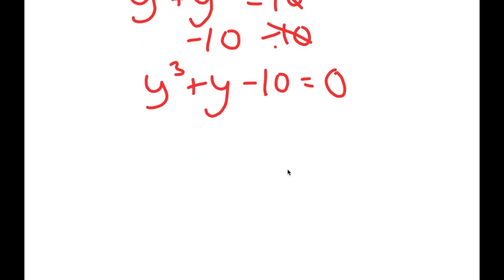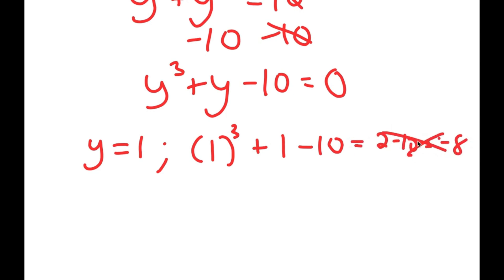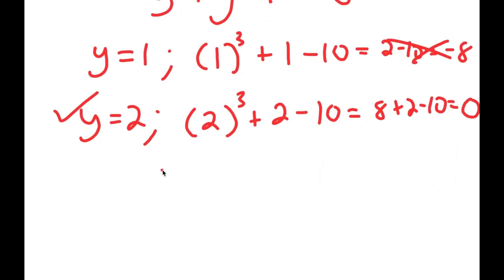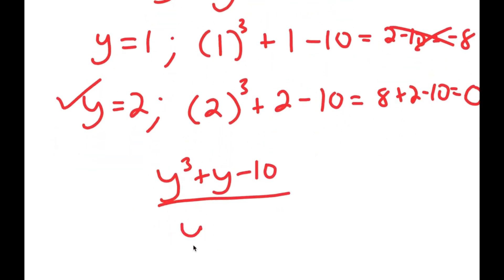To solve this equation, we need to first find one solution and then use that to find the remaining solutions. To find that first solution, we just test in values. Starting with y equals 1: I get 1 to the power of 3 plus 1 minus 10, which equals 2 minus 10, which is negative 8 — wrong. If y equals 2: I get 2 to the power of 3 plus 2 minus 10. 2 to the power of 3 is 8, so 8 plus 2 minus 10 equals 0. So y equals 2 is a solution, meaning I can divide y cubed plus y minus 10 by y minus 2.